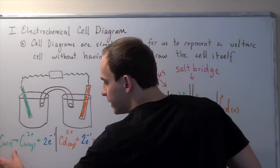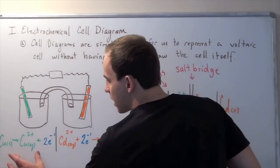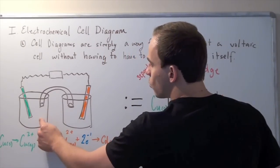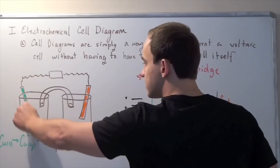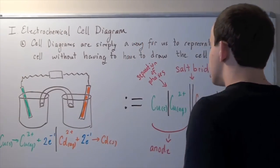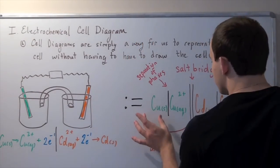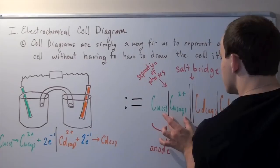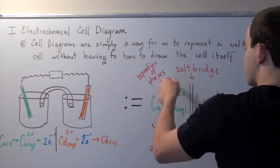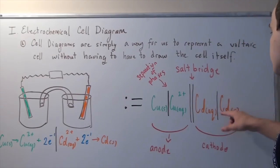For example, we have our solid copper and our aqueous copper. Aqueous copper is found in solution in beaker one, and the solid copper is this electrode bar. We have the electrode bar on this side and aqueous copper on this side, and this is our separation of phases.